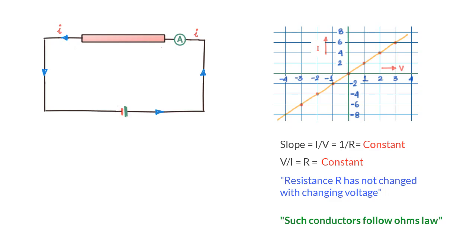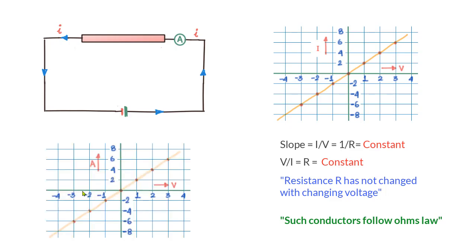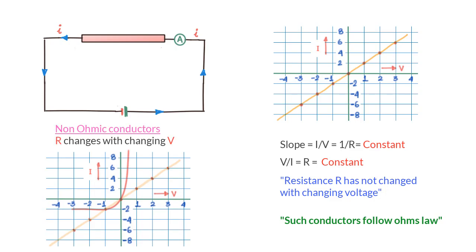On the other hand, we could have conductors where if we change the applied voltage we can end up getting a graph like this, and we can clearly see the applied voltage and the current does not have a linear relationship. The ratio V by I keeps changing with the applied voltage, and since V by I is the value of resistance, we say the resistance is also changing with the applied voltage and we conclude that such conductors do not follow Ohm's law.